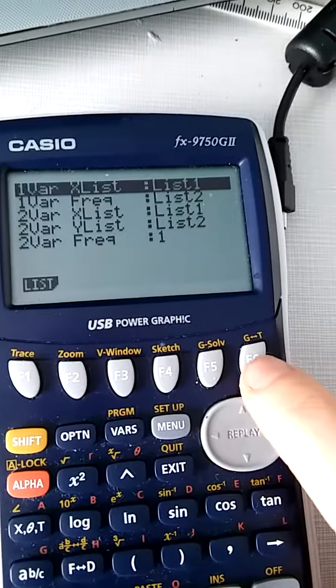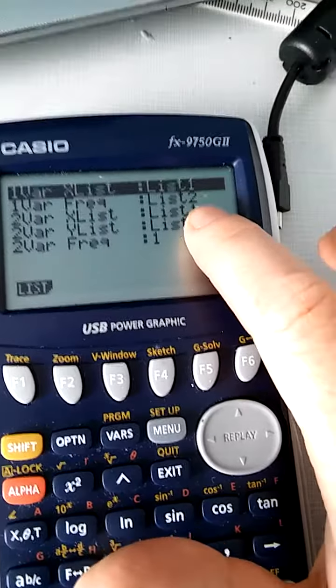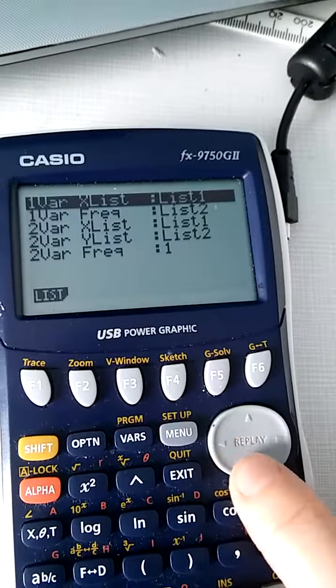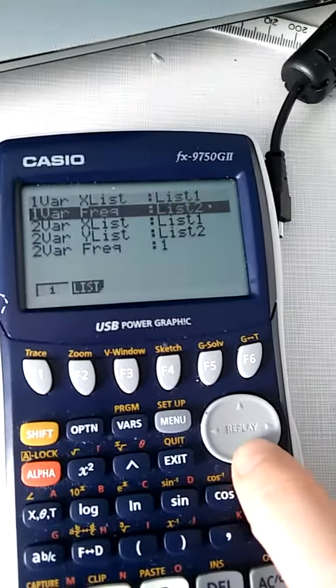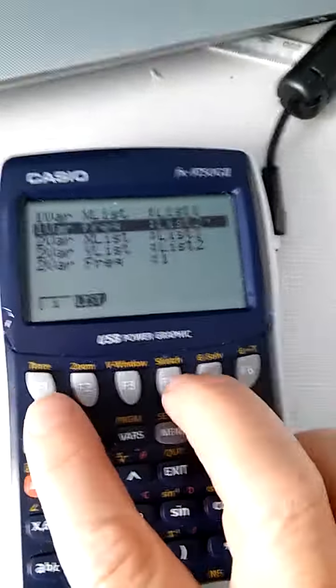Here we've got the setting. Our x numbers are in list one, correct. Our frequencies in list two, incorrect. We don't have a frequency, we only have one of each value. So hover over that with the cursor key and press F1. There we go.